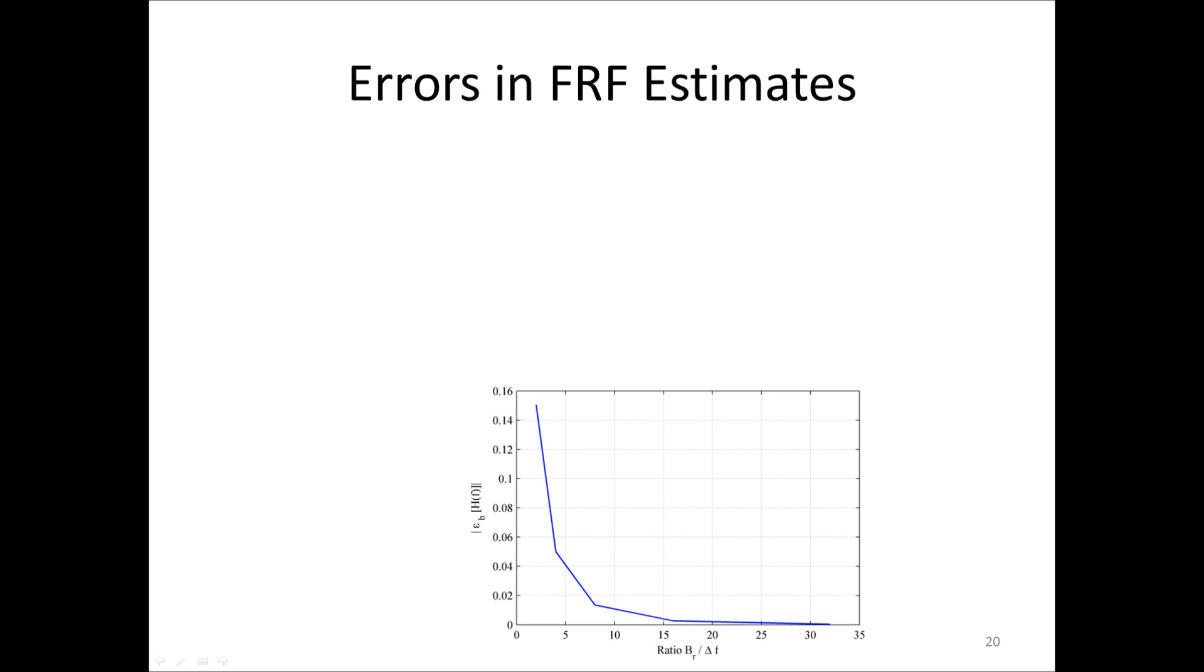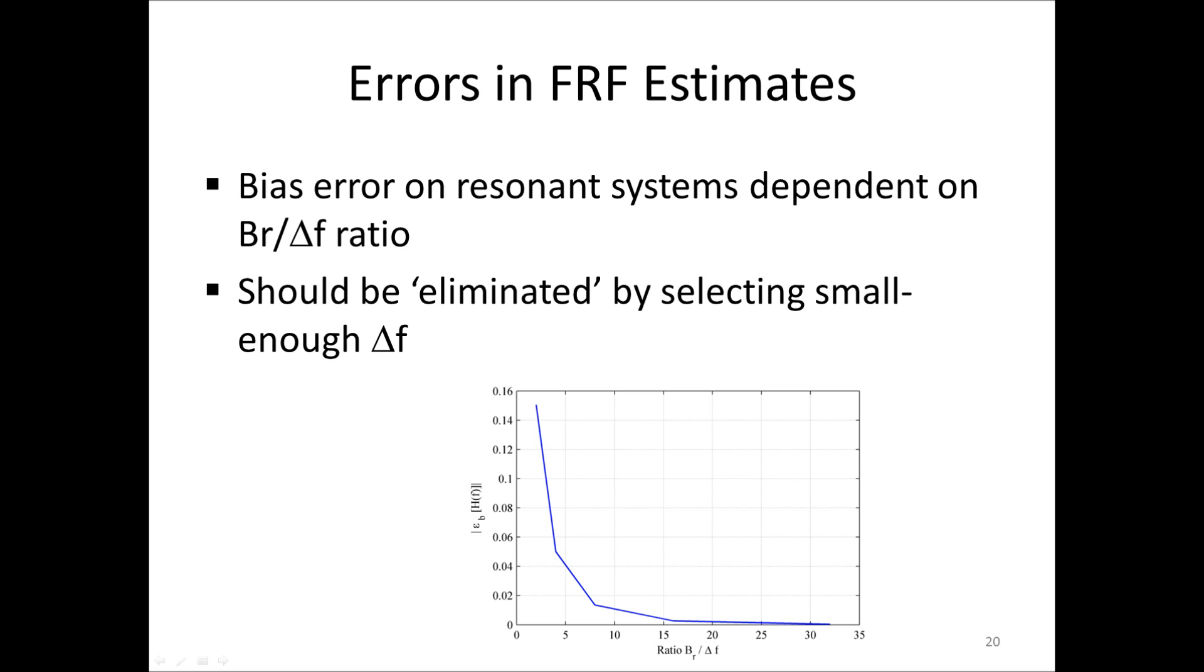Another cause of bias error in FRF estimates is that we are estimating a continuous function by a discrete spectrum, just as for the spectral density estimates we discussed in a previous video. It can be shown that this error is related to the ratio of the 3dB resonance bandwidth, BR, and the frequency increment, delta F, when we measure on resonance structures. In the plot here, which can be found in chapter 13 of the book, results are shown for a simulation. Now, like for PSD estimation, we eliminate this bias error by reducing the delta F until the error is negligible. So, the principle that we showed for practical spectrum estimation, where we begin with a small block size and increase the block size until peaks don't get higher, that same principle applies to FRF estimation.